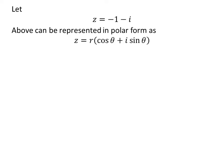Let us assume Z be equal to minus 1 minus i. The complex number Z can be represented in polar form as r times cosine of theta plus i times sine of theta.